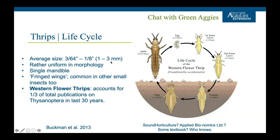The average size of thrips is about 3/64ths to 1/8th of an inch. They have rather uniform morphology — pretty slender. Once you've seen one thrips (yes, the singular form of thrips is thrips), you've seen them all in terms of general structure. About one third of all research publications in the last 30 years are on Western flower thrips. So even though there are over 6,000 species, a very small subset are economically important — and within that, Western flower thrips is studied by far the most.